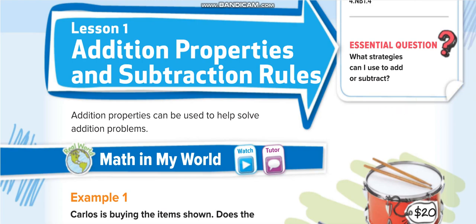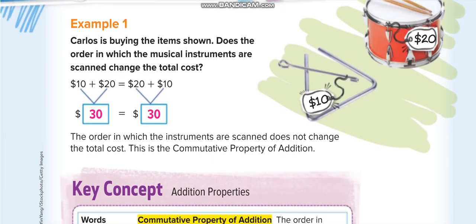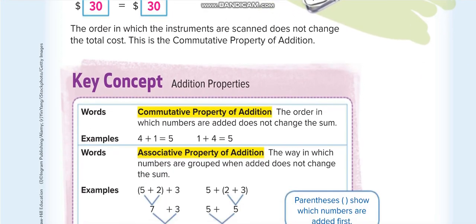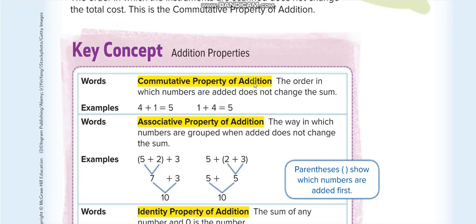Here is the first one. Let's see this example: 10 plus 20 gives you 30, or if you do 20 plus 10 — if you switch the numbers — you get the same answer. That property is known as the commutative property of addition. It states that the order in which numbers are added does not change the sum. For example, 4 plus 1 or 1 plus 4 both equal 5. Similarly, 6 plus 3 or 3 plus 6 both give 9.